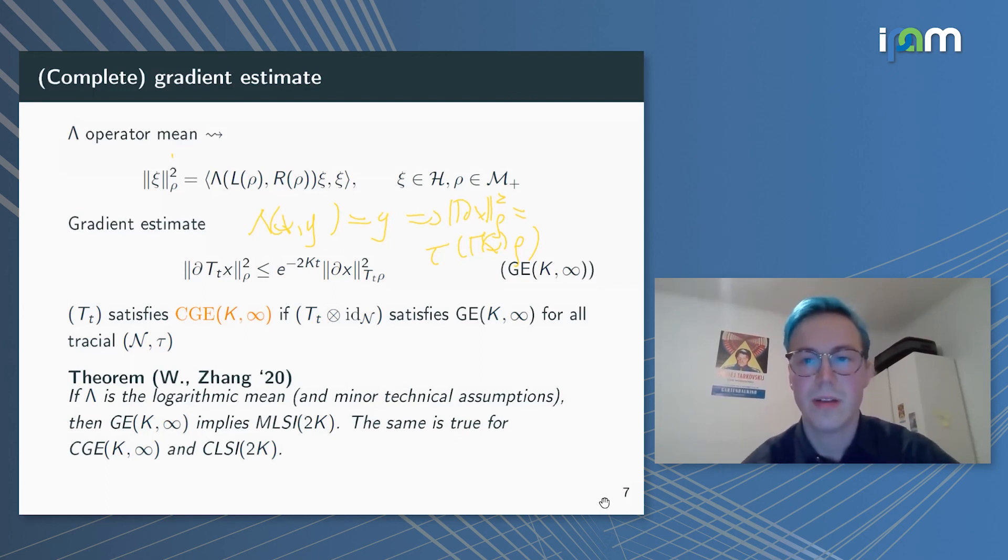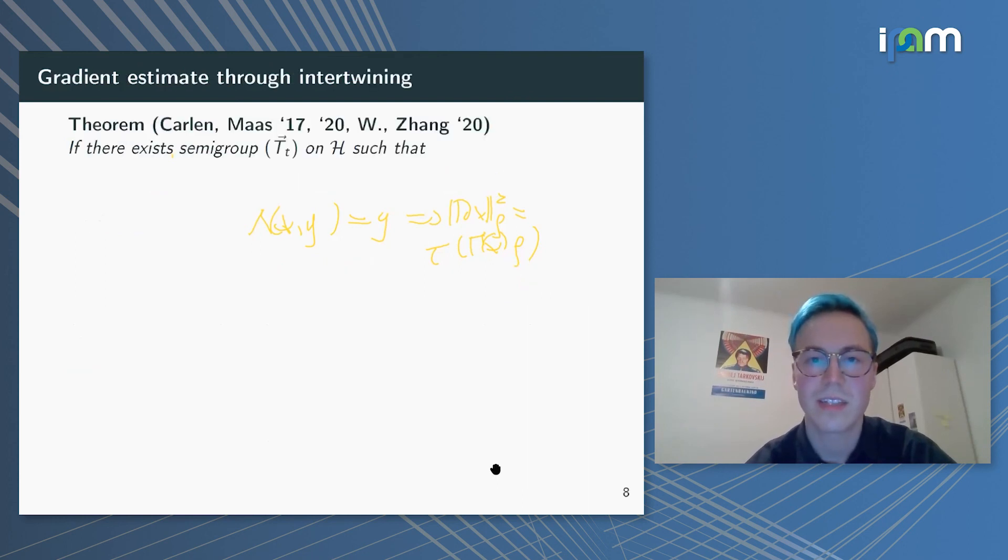Now I gave you this new inequality GE(k,∞), told you it implies a well-known inequality. Of course, this is all not very interesting unless we can prove at least in some cases that this new inequality GE(k,∞) is satisfied. So let's look how we can do this.